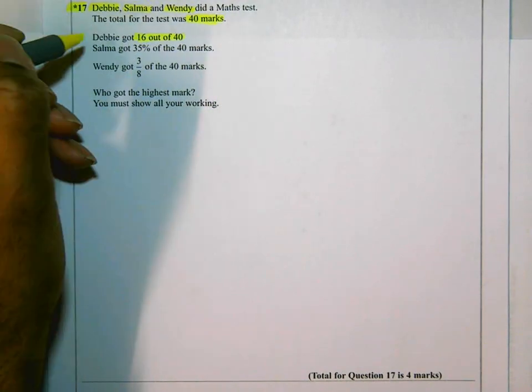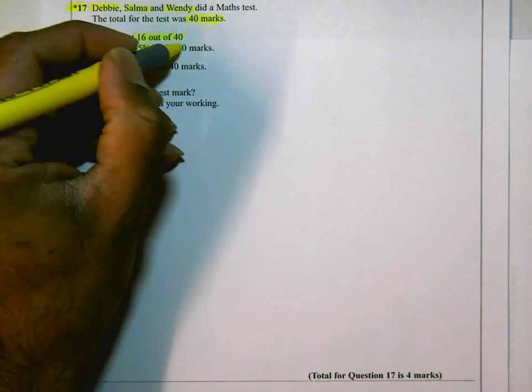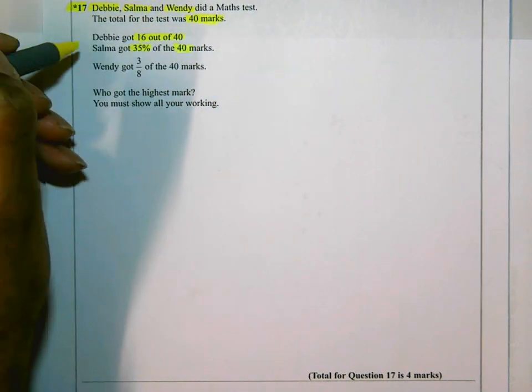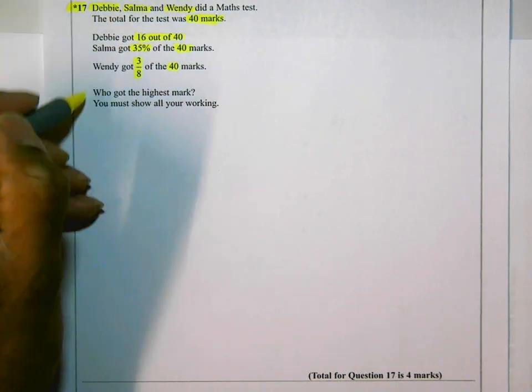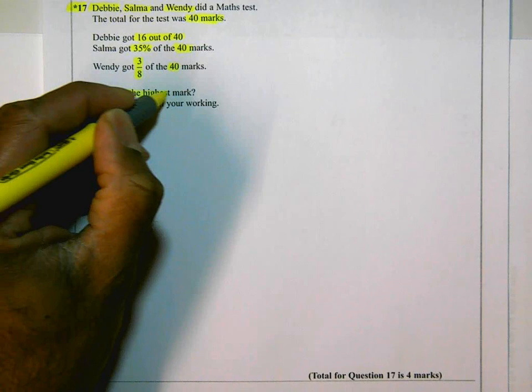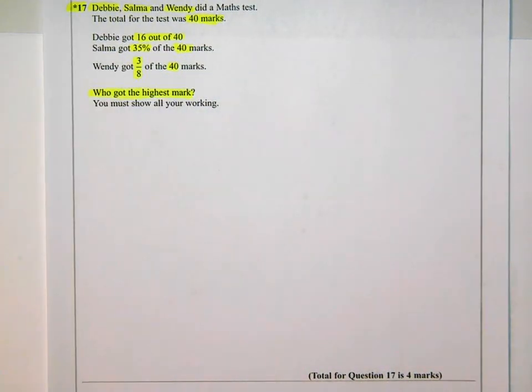Debbie got 16 out of 40. Salma got 35% of the 40 marks, and Wendy got 3/8 of the 40 marks. Who got the highest? This question is on fractions and percentages. They want us to show all the workings.